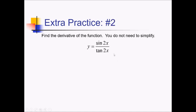For this problem, we want the derivative of sine of 2x over tan of 2x. One way to do this is with a quotient rule, but if you do a little trig simplifying, you can save yourself a few steps. The tan function down here is really sine over cosine of 2x. Multiplying by the reciprocal, we end up with sine of 2x times cosine of 2x over sine of 2x. Those sines cancel, leaving us with just cosine of 2x. The derivative requires the chain rule — derivative of cosine is negative sine, so we get negative sine of 2x with a tail of 2, giving us negative 2 sine of 2x.